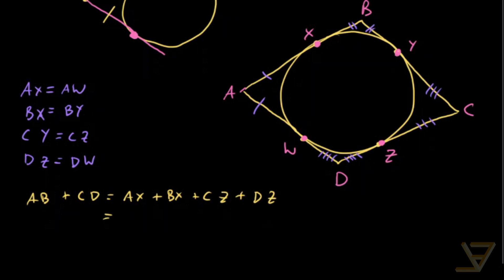And now what we're going to do is we're going to switch. So we're going to replace AX with AW, and we're going to replace BX with BY, and CZ with CY, and DZ with DW. And if we rearrange the terms, we get AW plus DW plus BY plus CY.